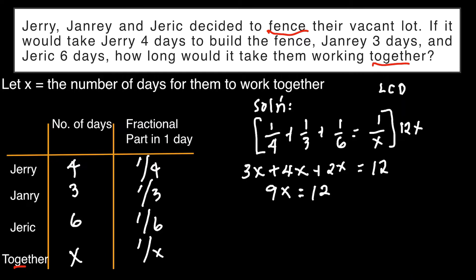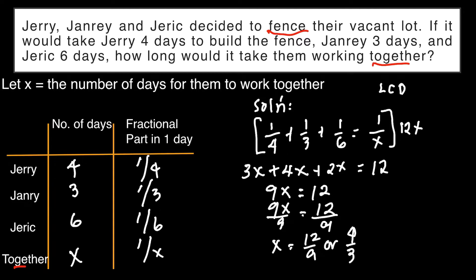Solving for x, we divide both sides by 9. So x equals 12 over 9, or that is 4 thirds, or simply 1 and 1 third days. Meaning, if they work together, they can finish the task in 1 and 1 third days.